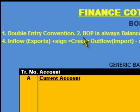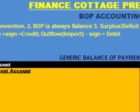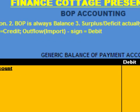The second important thing is that balance of payment is always balanced. Because the balance of payment accounting system is based on double entry bookkeeping convention, the total of debit entries is always equal to the total of credit entries. So it is illogical to say that balance of payment is in disequilibrium — it is always in equilibrium and always balanced.